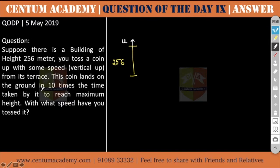This coin lands on the ground in 10 times the time taken by it to reach maximum height. Time taken to reach maximum height multiplied by 10 is the time taken to reach the ground.